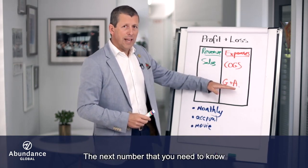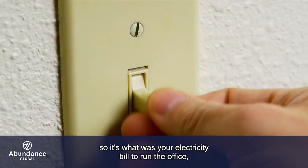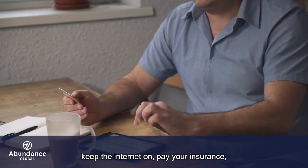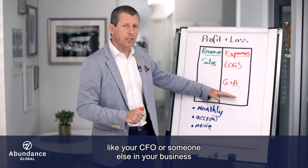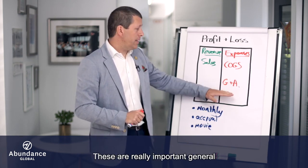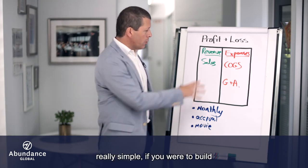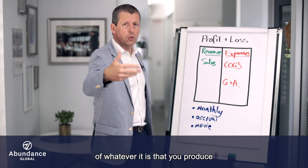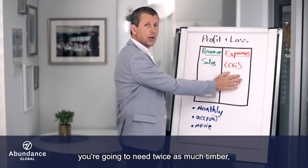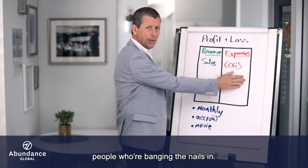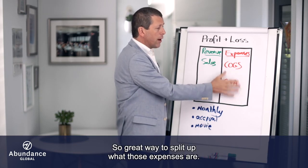Your general and administrative expenses are the things that probably don't change much from month to month — things like your electricity bill to run the office, keeping the internet on, paying your insurance, a receptionist who's not banging nails into timber, your CFO or other administrative functions, your bookkeeper, your accounting fees. A really simple way to split up your expenses: if you were to build twice as many houses, you'd need twice as much timber, twice as many nails, twice as many people — but you don't need twice as many lights in your office or two internet connections. That's how you tell them apart.